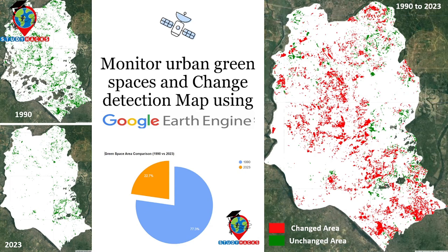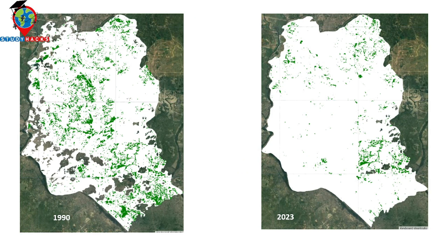After completing this tutorial, you will be able to monitor urban green space as well as compare two time periods for urban green space change detection. Here you can see I have created this type of urban green space map for two different time periods — one map for 1990 and another map for 2023.